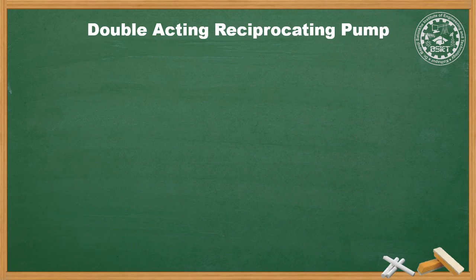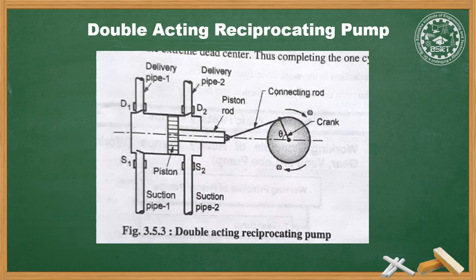The second is the double acting reciprocating pump. The disadvantage of the single acting pump — that discharge is intermittent — is eliminated here. This pump uses two suction and delivery pipes, one on each side, so suction and delivery strokes occur simultaneously. When the crank rotates from the inner dead center, a vacuum is created on the left side of the piston and liquid is sucked through suction valve S1. At the same time, liquid on the right side is pressurized, opening delivery valve D2 and pushing liquid out, while suction valve S2 remains closed.